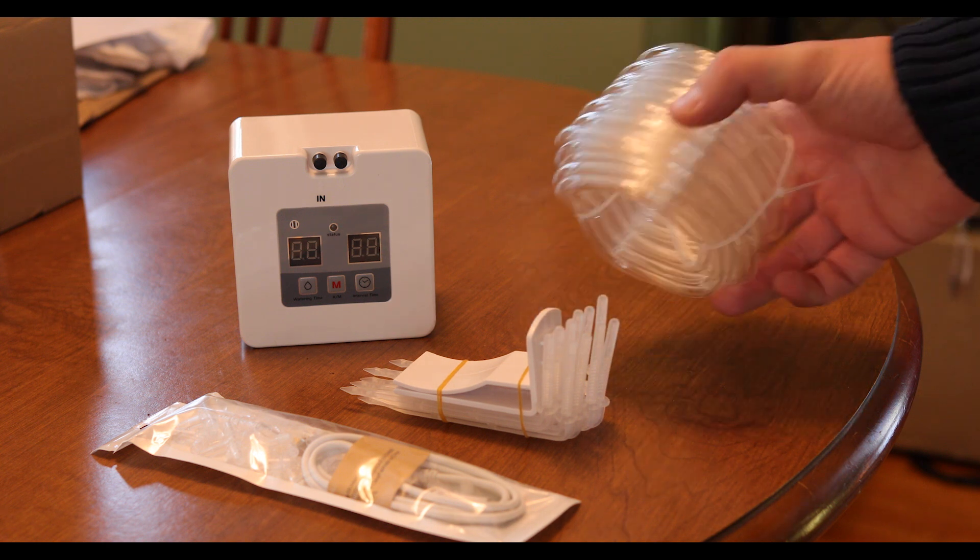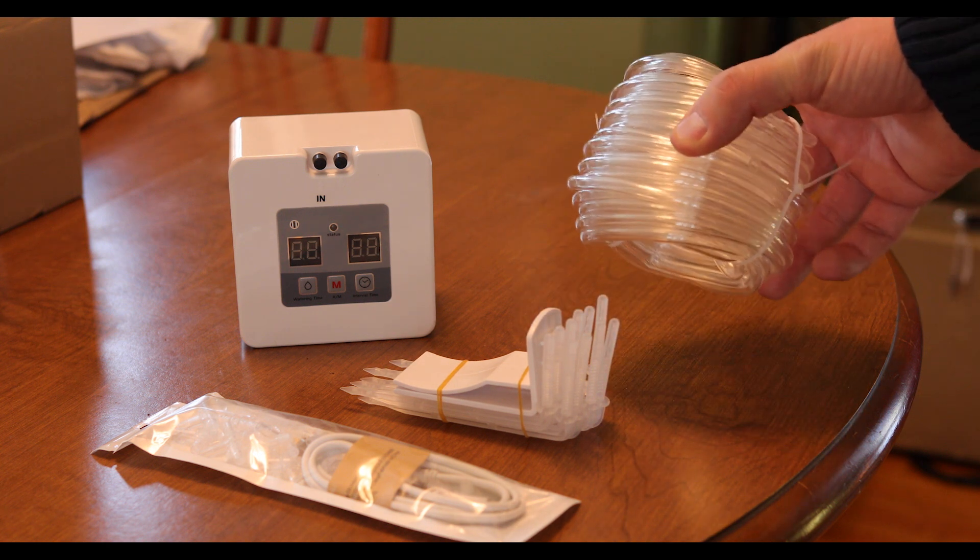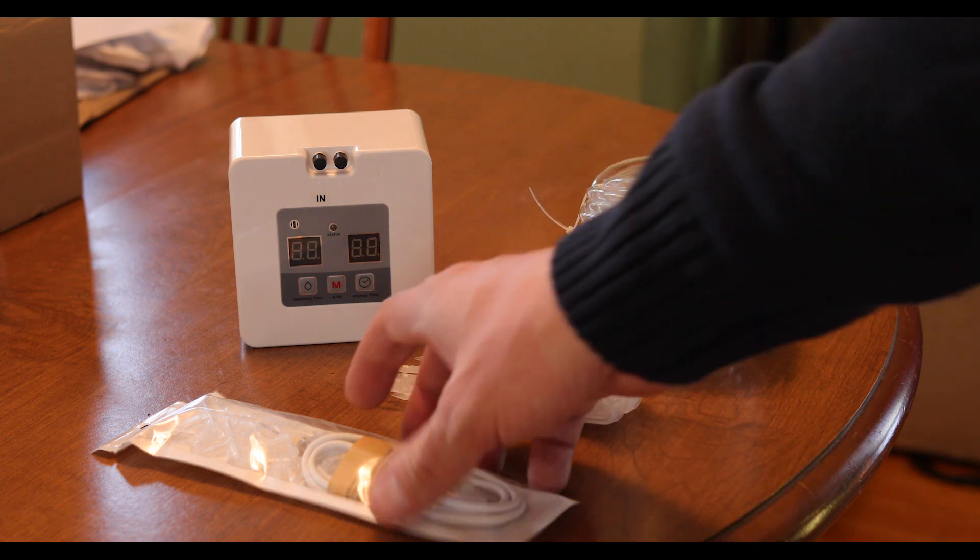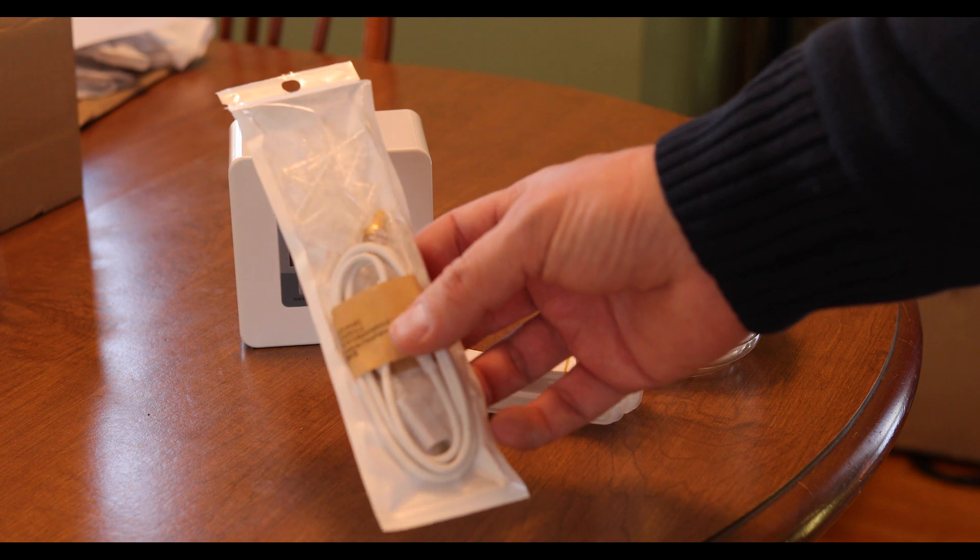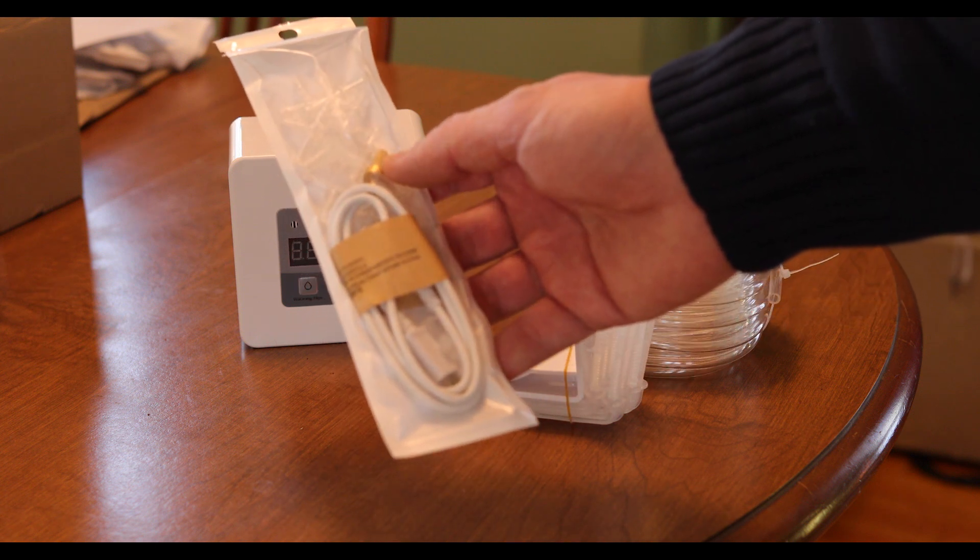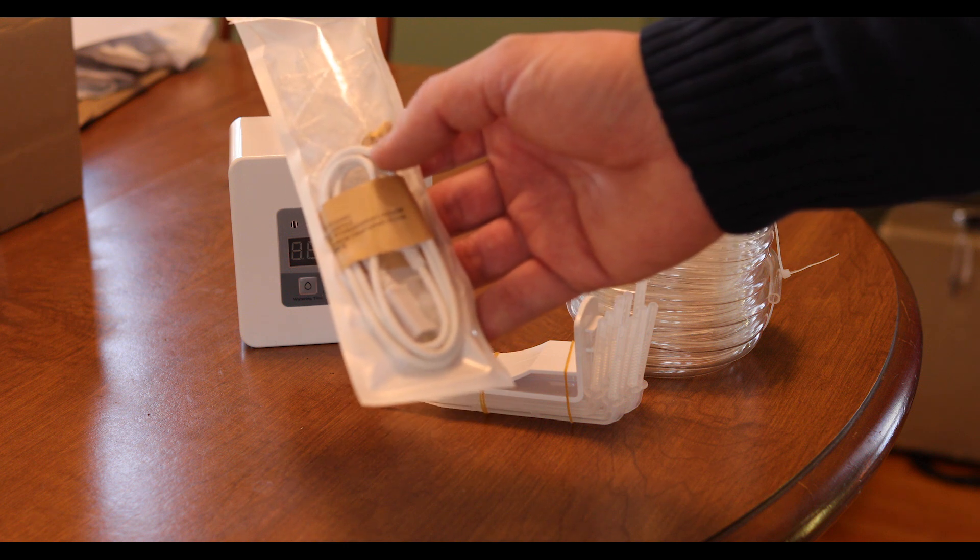When you get the box, this is what you're gonna find: a spool of plastic hose, some hard plastic drip tips, a bag with some three-way and four-way splitters as well as an intake filter, and a USB power cable.